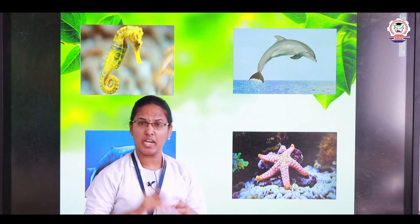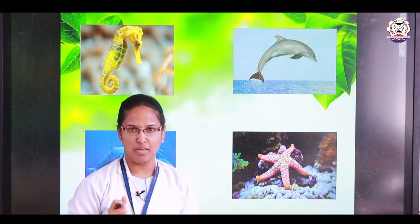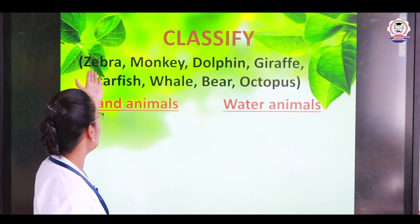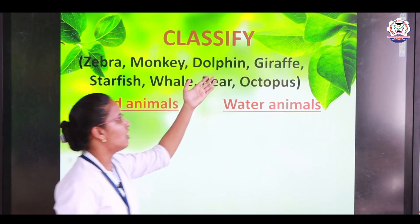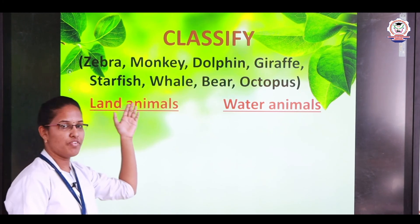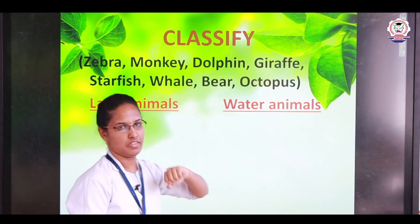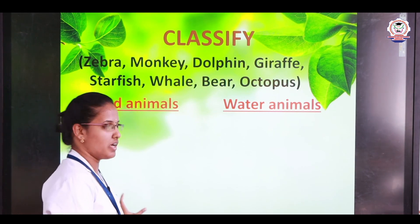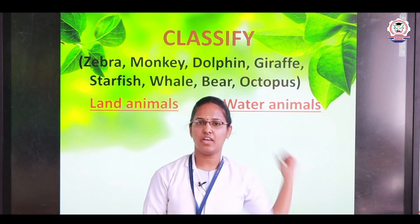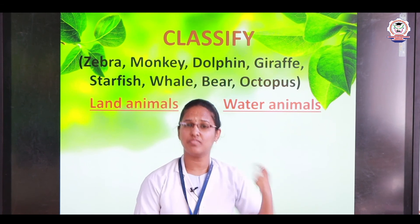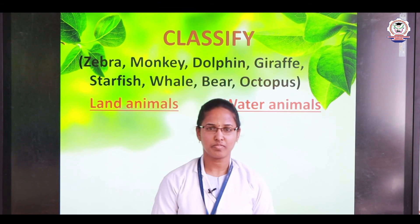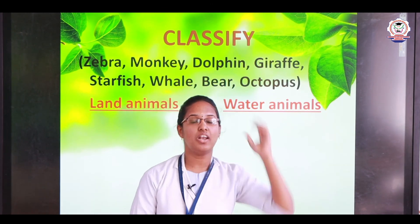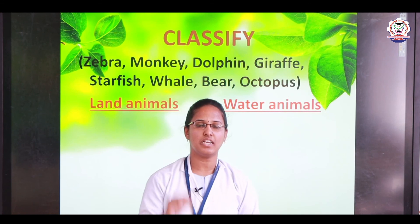Now children, we have discussed many things — many water animals and land animals. Now I am going to give you an activity. You have to classify these into land animals and water animals: Zebra, Monkey, Dolphin, Giraffe, Starfish, Whale, Bear, Octopus. Take your notebook and classify the water animals and land animals. Also find out which is the tallest animal from the list and write it down in your notebook.